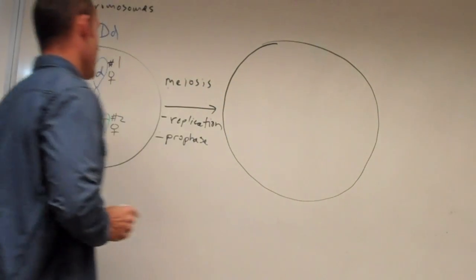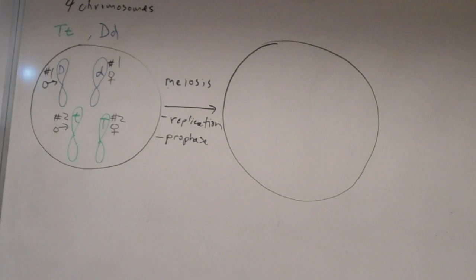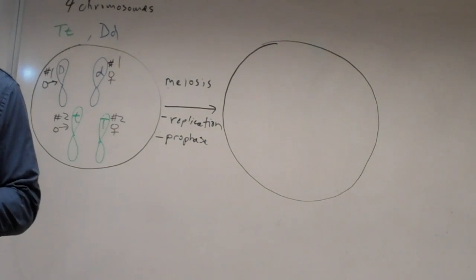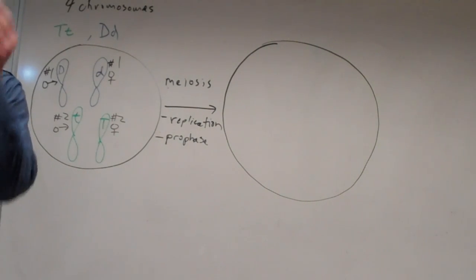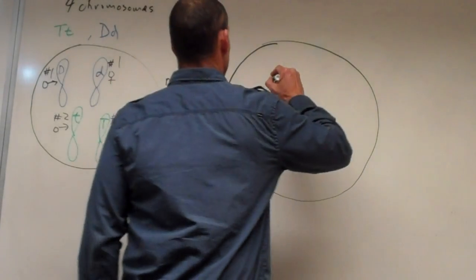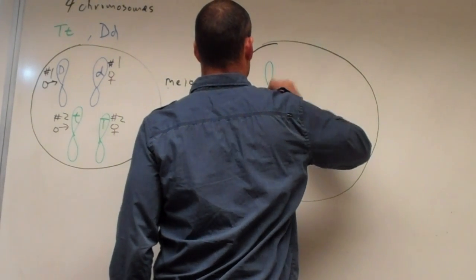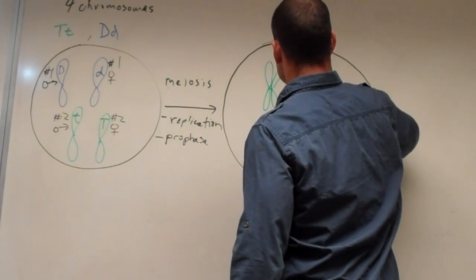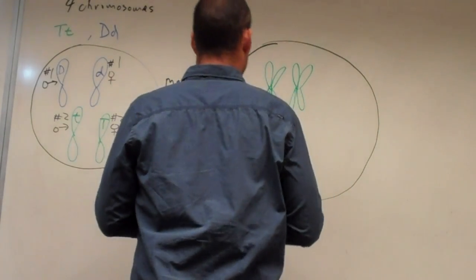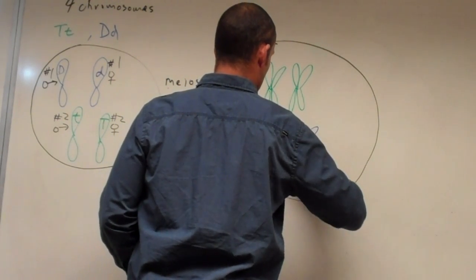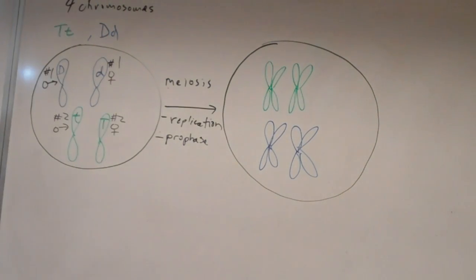I used to have an activity where students would pair up the homologs. The hardest part for them to get is that in mitosis the double chromosomes line up in the middle, and in meiosis they still line up in the middle, but they do something a little bit different. The homologs pair up side by side — they're still lined up in the middle, but the homologs are paired next to each other.